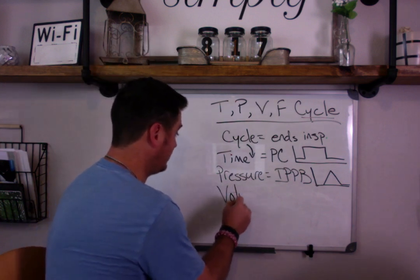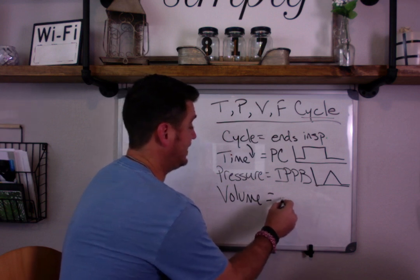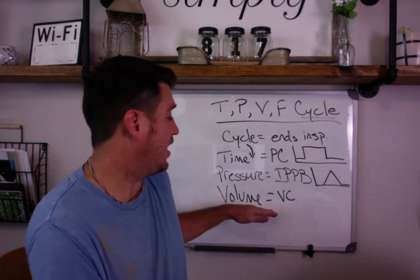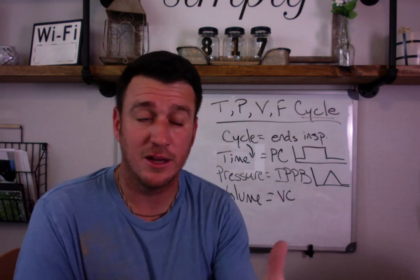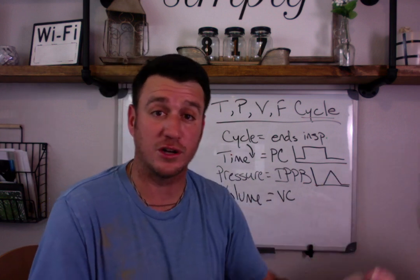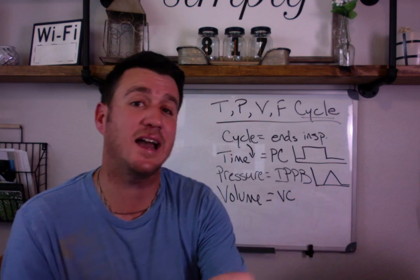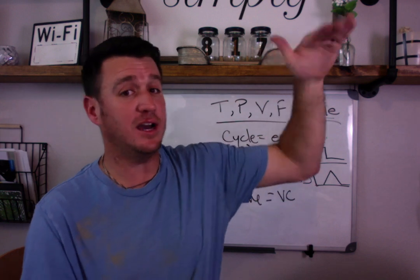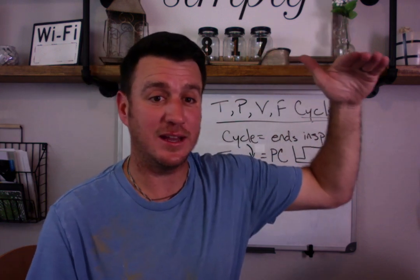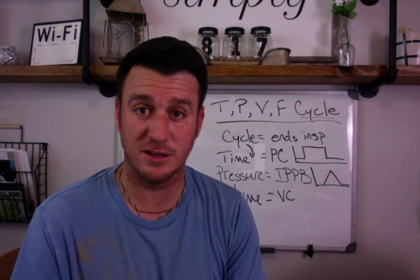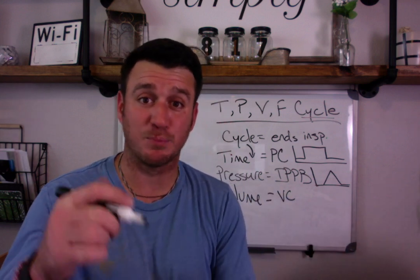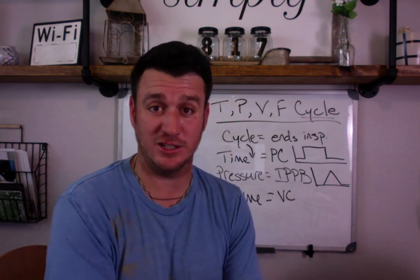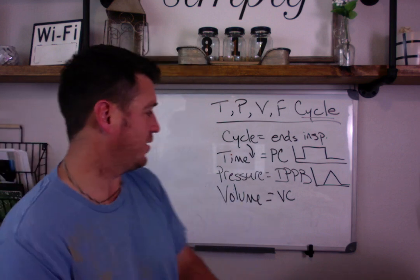The next one is volume cycling, which applies to your volume control modes — VC-AC, VC-SIMV — they all operate on volume. You tell the ventilator to give a tidal volume of 450 milliliters; you don't set a pressure, you set a tidal volume. The vent delivers 450 mL, and when it's done, it cuts off and allows the patient to exhale. When this preset volume is reached, it cycles into exhalation and does not give more than the set tidal volume.